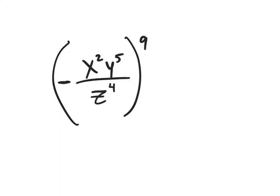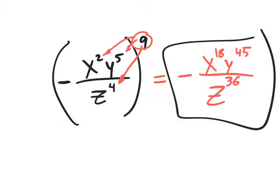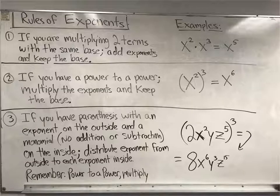One more: we have negative something to the ninth power — that's an odd exponent, so the answer is going to be negative. Distributing the nine: x to the second gets nine giving x to the 18th, y to the fifth gets nine giving y to the 45th, z to the fourth gets nine giving z to the 36th. The final answer is negative x to the 18th y to the 45th z to the 36th. You have to put the negative. I hope this lesson helps you understand the first three rules of exponents better. Please make sure you watch the first video on these three rules.